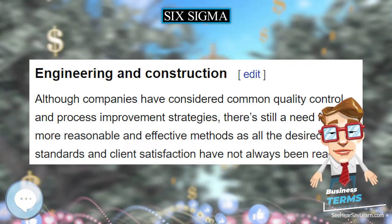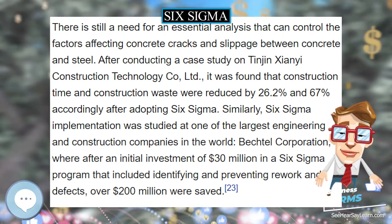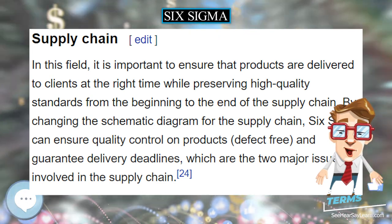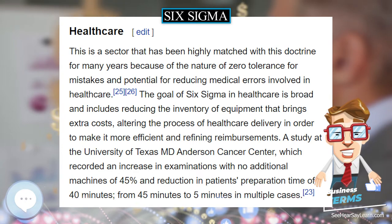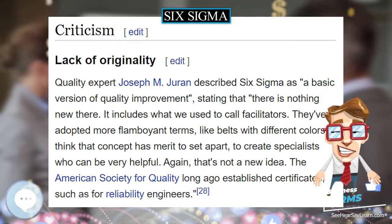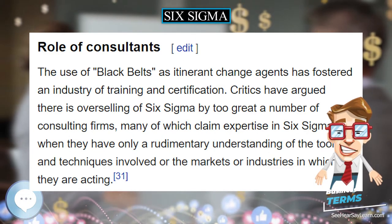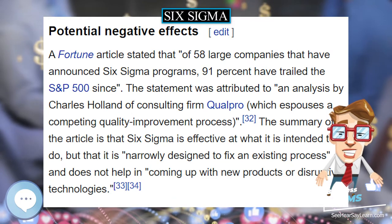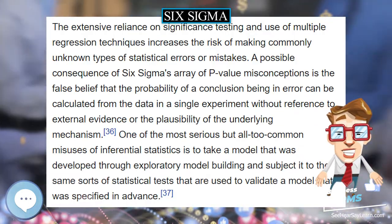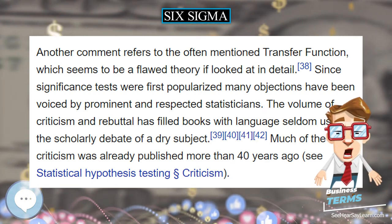Hence, the widely accepted definition of a 6 Sigma process is one that produces 3.4 defective parts per million opportunities, DPMO. This is based on the fact that a normally distributed process will have 3.4 parts per million outside the limits when the limits are 6 Sigma from the original mean of 0 and the process mean is shifted by 1.5 Sigma, making the 6 Sigma limits no longer symmetrical about the mean. The former 6 Sigma distribution, under the effect of the 1.5 Sigma shift, is commonly referred to as a 4.5 Sigma process. The role of the 6 Sigma shift is mainly academic.